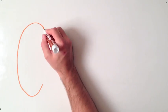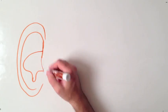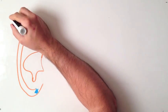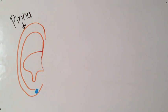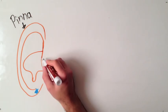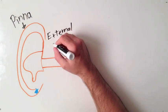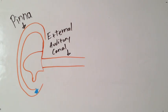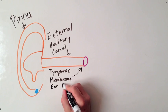Let's talk about ear anatomy. That part that sticks out that most of us consider the ear is called the pinna. Then there's a tube going into our head. We call this the external auditory canal. There's the eardrum, which doctors like to call the tympanic membrane.